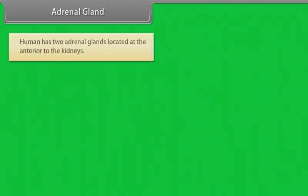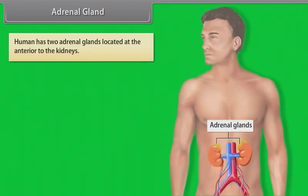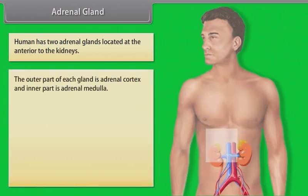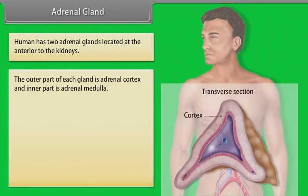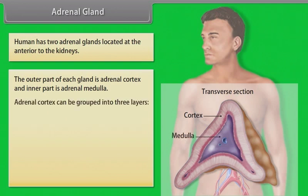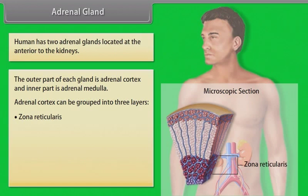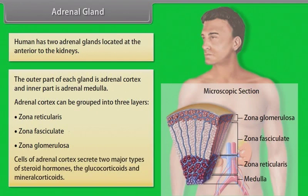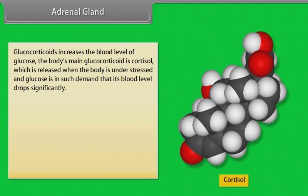Humans have two adrenal glands located anterior to the kidneys. The outer part of each gland is the adrenal cortex and the inner part is the adrenal medulla. The adrenal cortex can be grouped into three layers: zona reticularis, zona fasciculata, and zona glomerulosa. Cells of the adrenal cortex secrete two major types of steroid hormones: glucocorticoids and mineralocorticoids. Glucocorticoids increase the blood level of glucose. The body's main glucocorticoid is cortisol, which is released when the body is under stress and glucose is in high demand.